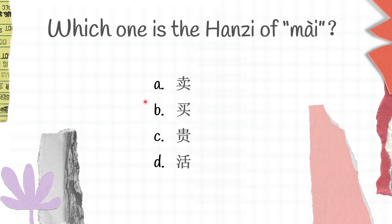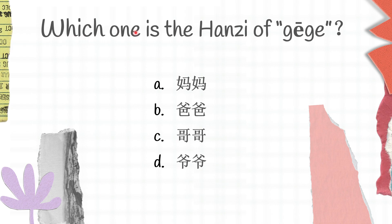Actually it's a little bit tricky here, so don't worry about it. The next question: which one is the character for 姑姑 (guge)? Do you guys still remember or did you totally forget? A here is 妈妈 (mama), B is 爸爸 (papa), C is 姑姑 (guge), and D is 爷爷 (ye ye). The right answer for this question is C.